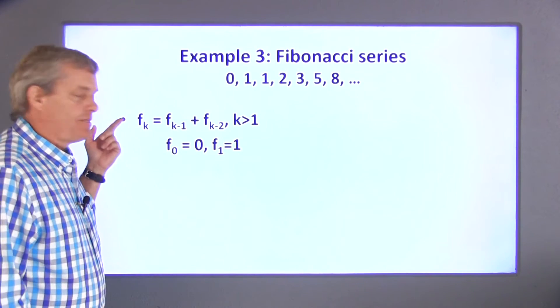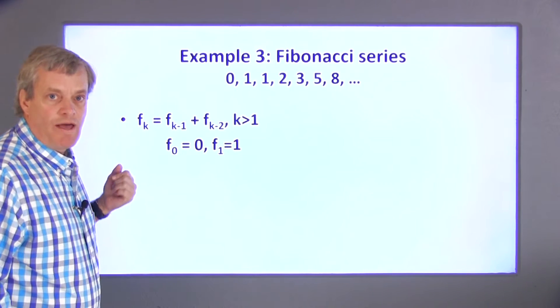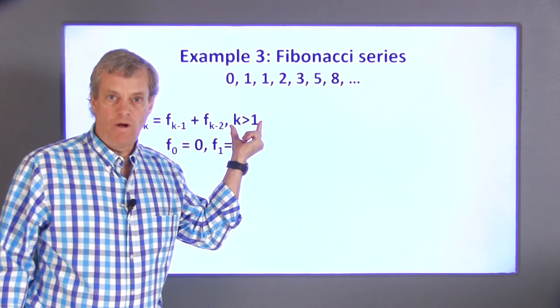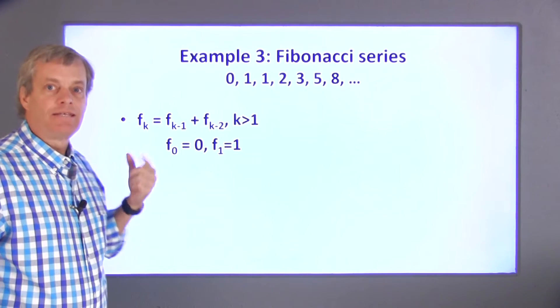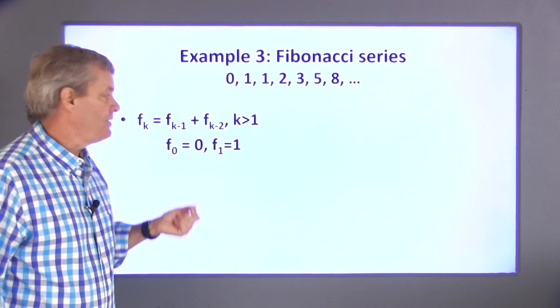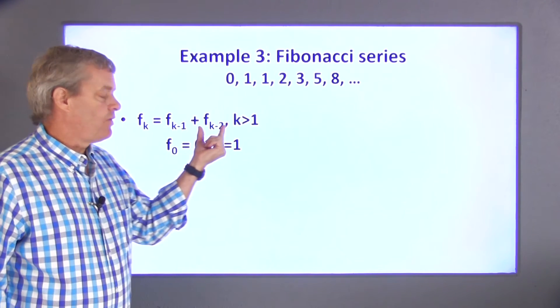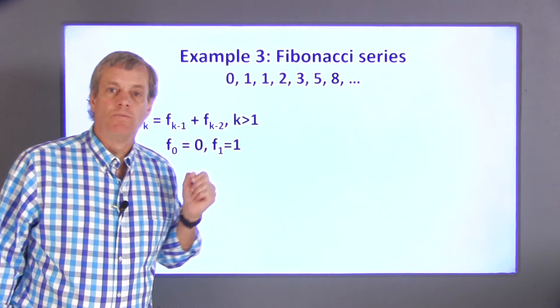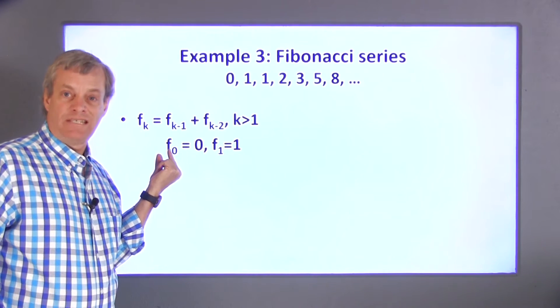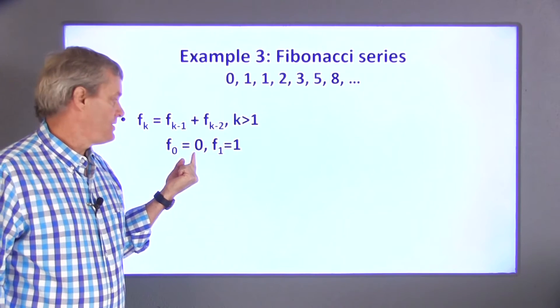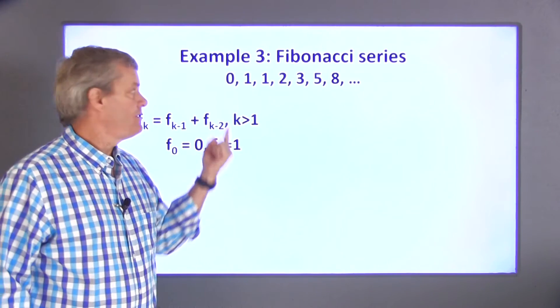Mathematically, the Fibonacci series is usually expressed this way. For k greater than 1, the kth element of the series, F sub k, is the sum of the previous two elements: F sub k minus 1 plus F sub k minus 2. K is typically started at 0, so the 0th element of the series is 0 and the first element of the series is 1.